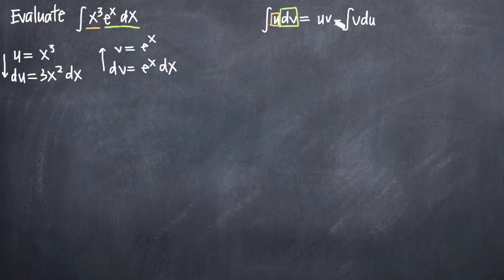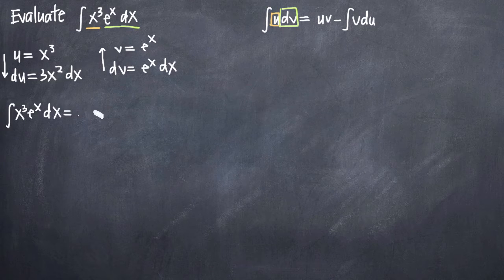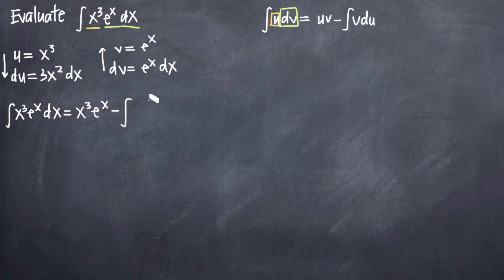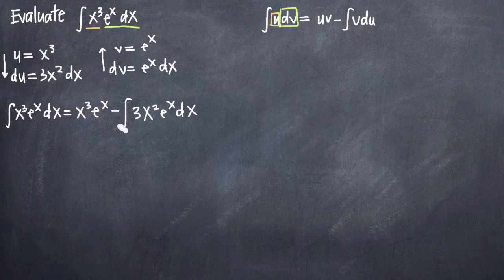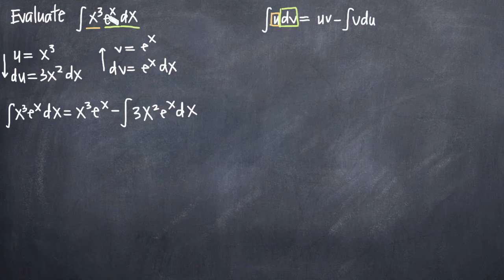So we have first u times v. Our original integral x cubed e to the x dx is equal to u times v — which we know to be x cubed times e to the x — minus the integral of v times du, which gives us 3x squared e to the x dx. Now we still have an integral that's too complicated to integrate on its own, but instead of having x cubed, we've got 3x squared. The degree of that term went down by one — we had a third degree power function, and now we have a second degree power function.